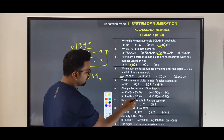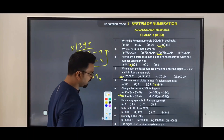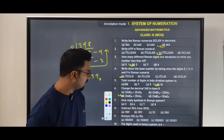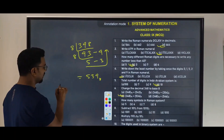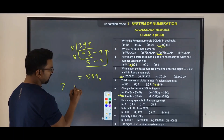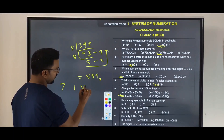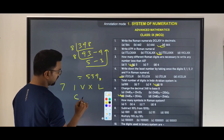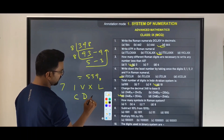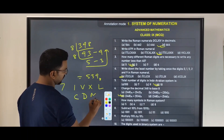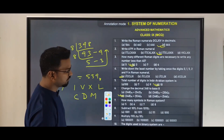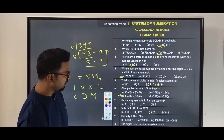Next question: how many symbols are there in the Roman system? There are seven symbols: I equals 1, V equals 5, X equals 10, L equals 50, C equals 100, D equals 500, and M equals 1000. By using all these seven digits you can write any number in Roman numerals.